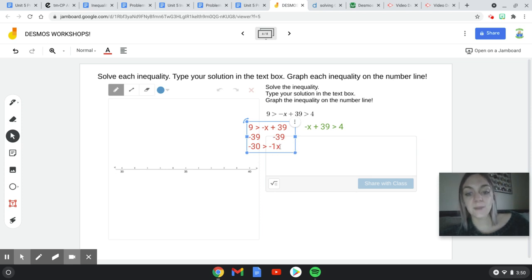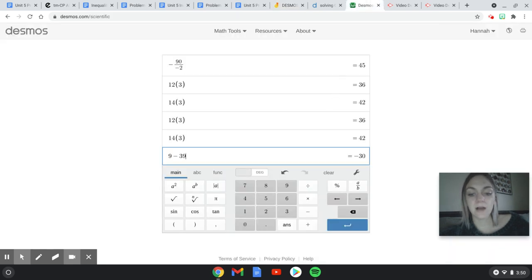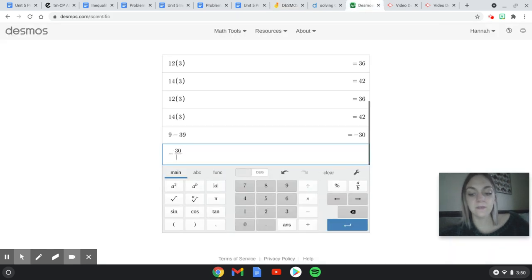So now I've got to get x by itself, so I need to divide by negative 1. So this symbol here means divide by negative 1. I'm going to divide this side by negative 1. And of course, going to Desmos, I've got negative 30 divided by negative 1, which gives me a positive 30. That makes sense. Anything divided by 1 is itself, and a negative divided by a negative is a positive.